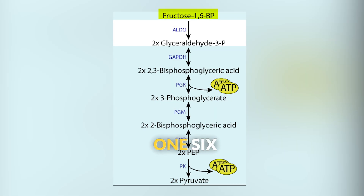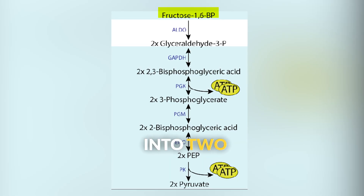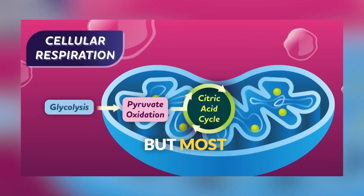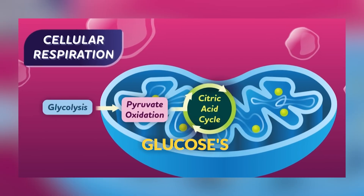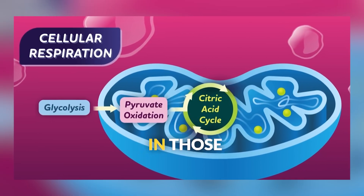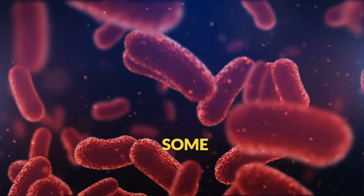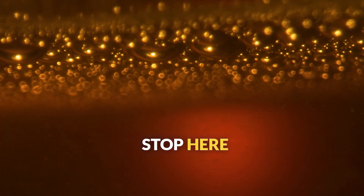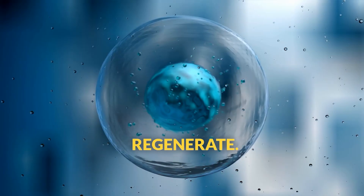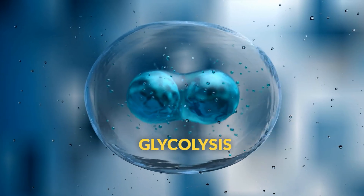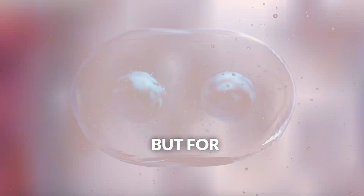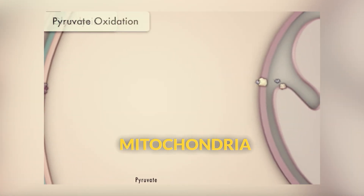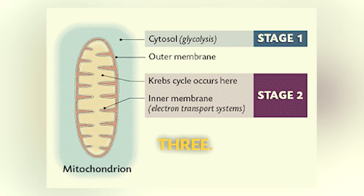Breaking one 6-carbon glucose into two 3-carbon pyruvates releases some energy, but most of the glucose's energy is still locked up in those pyruvate molecules. Some organisms, especially bacteria, stop here and use fermentation to regenerate the molecules needed to keep glycolysis running. But for maximum energy extraction, pyruvate heads to the mitochondria for stages 2 and 3.